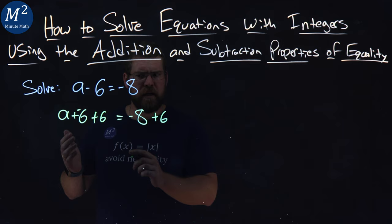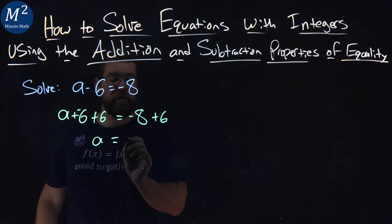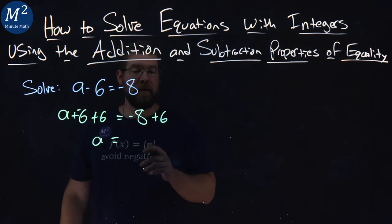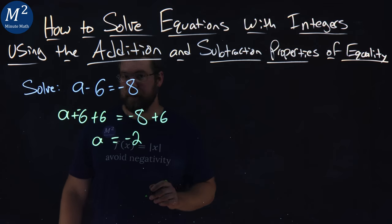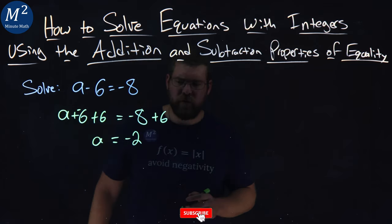The left-hand side, the 6s cancel. a is by itself is equal to negative 8 plus 6, comes out to be negative 2. All right, a equals negative 2.